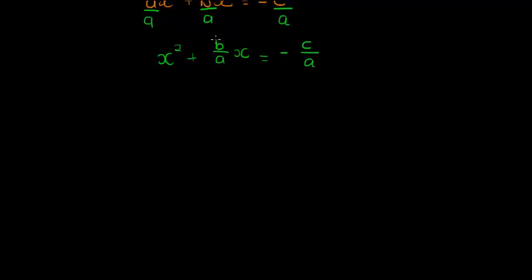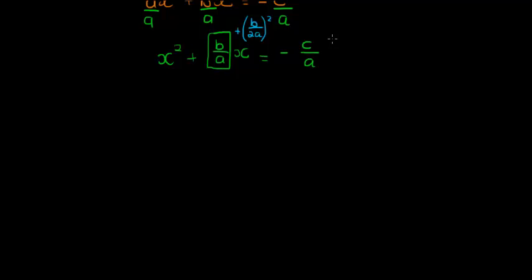In the next step, you'll recall what we now do to complete the square: take half of the coefficient of the middle term, square it, and add it on both sides. So on both sides, I'm going to add b over 2a, and I'm going to square that and add it on both sides.